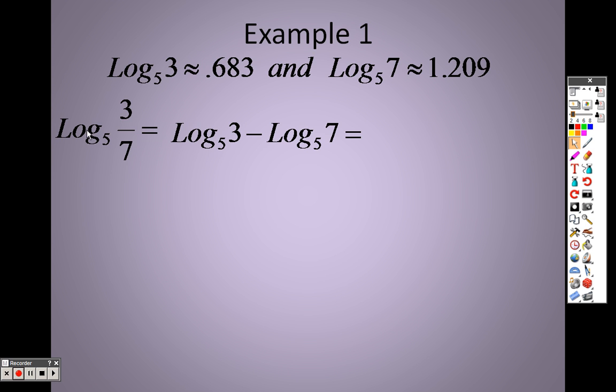So I can basically do log base 5 3 minus log base 5 7. Since I know log base 5 3 is .683, and I know that log base 5 7 is 1.209, basically all I'm saying is, I take each of those and subtract them to get negative .526.